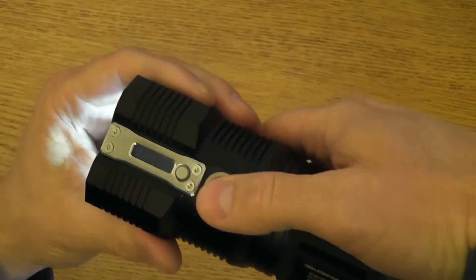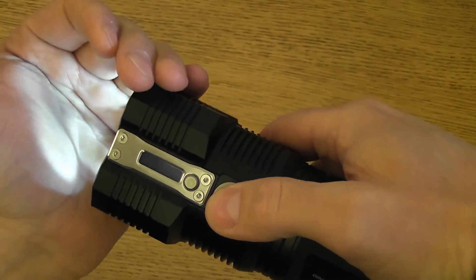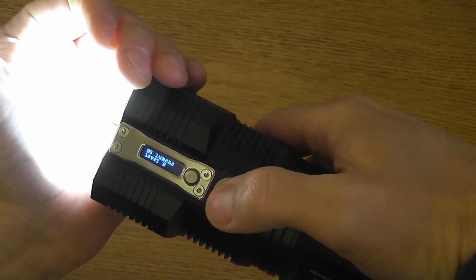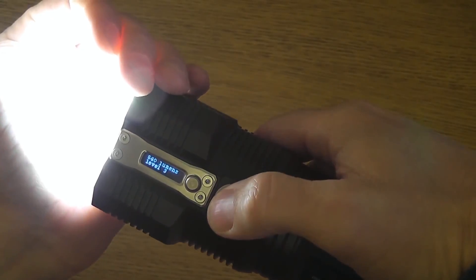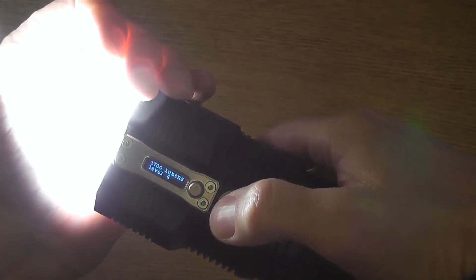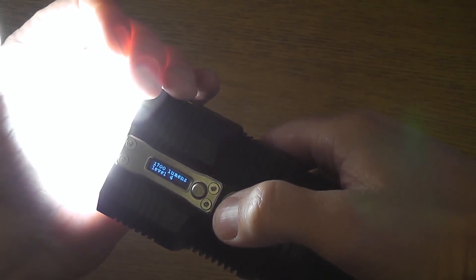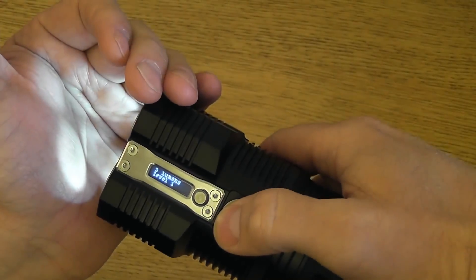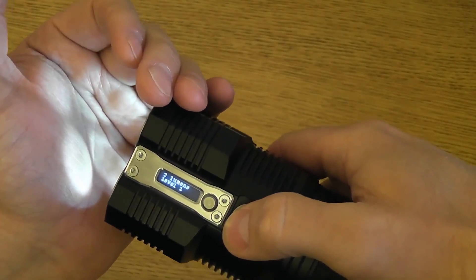Alright, that's better. So here's our daily modes. We're on low right now, three lumens. Soft press again gets me up to 95 lumens. Another soft press, 540 lumens. Another half press or soft press, 1700 lumens is level four. And then another press back down to one. So I've got four daily modes.